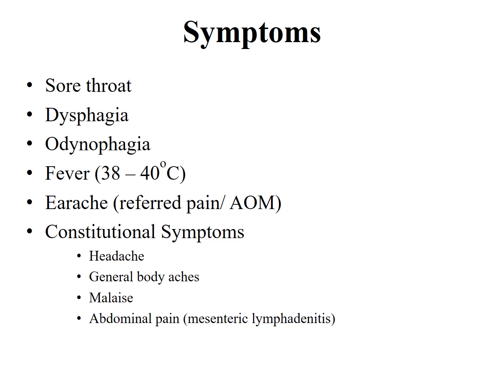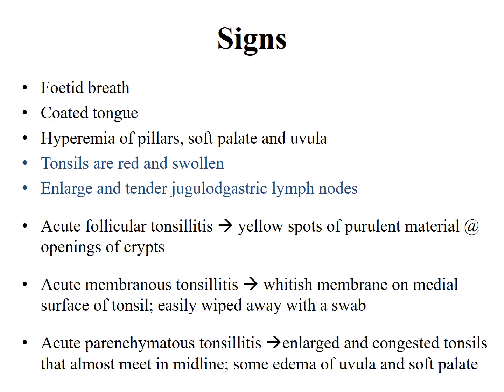On examination of the throat, findings include bad breath, a coated tongue, and hyperemia of the pillars of the palate and uvula. Tonsils are red and swollen, with enlarged and tender jugulodigastric lymph nodes. These are the main diagnostic examination findings for acute tonsillitis, and tenderness of the jugulodigastric lymph nodes along with red and swollen tonsils also differentiates it from chronic tonsillitis.